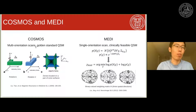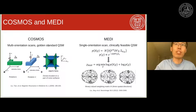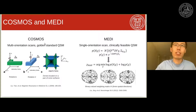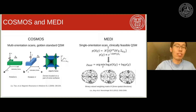COSMOS has been the golden standard in QSM for both algorithm development and clinical papers. But the drawback of COSMOS is very obvious: it requires multiple orientation scans, which is not feasible for clinical application. A more feasible approach is called MEDI, a single orientation scan. In single orientation, we always have this zero cone, which causes ill-posedness in QSM.